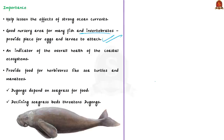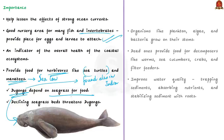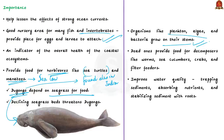Seagrasses also provide food for herbivores like sea turtles and manatees, which are sea cows. Particularly, seagrasses are important for the survival of dugongs — sea cows found along the coast of many countries including India — which depend on seagrass for food. Additionally, organisms like plankton, algae, and bacteria grow on the stems of seagrasses, and since these are crucial food sources for many aquatic organisms, seagrasses indirectly support the survival of other aquatic organisms.